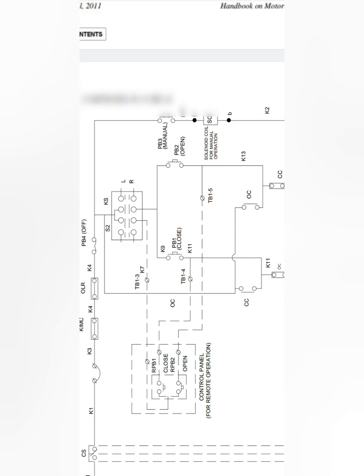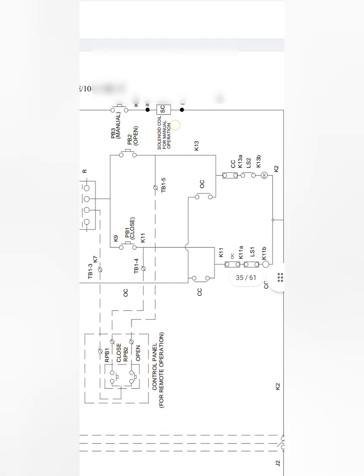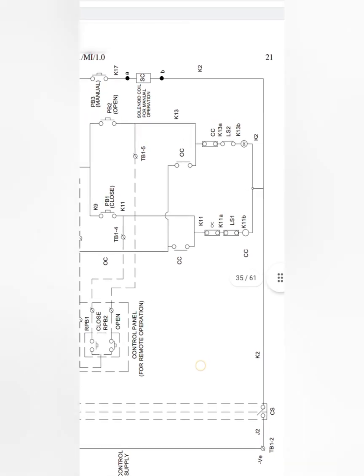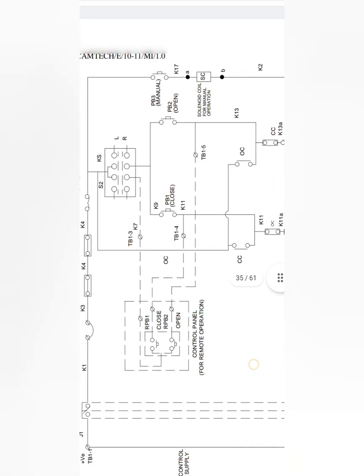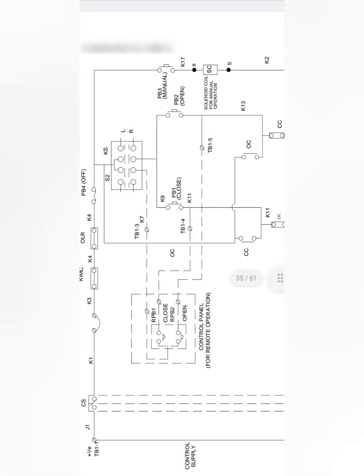The third one is your solenoid coil, which is for manual operation. If manual operation needs to be carried out mechanically, the solenoid coil will be connected with your key interlocking systems. If we push this manual push button PB3, automatically your solenoid coil gets energized, and then from that solenoid coil we can remove the key interlocking keys. We then need to fix those keys in your mechanical operator box, and then only we can do the mechanical operation.